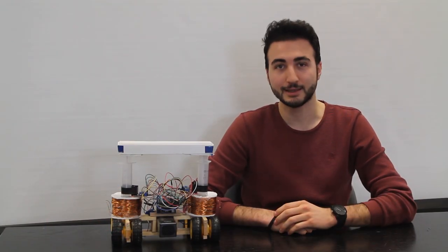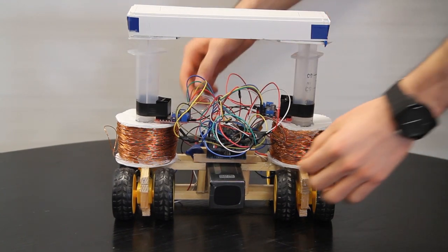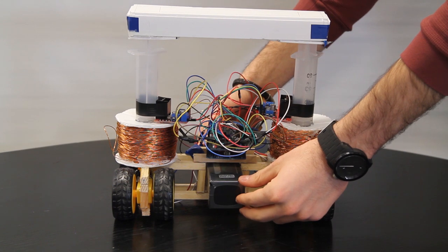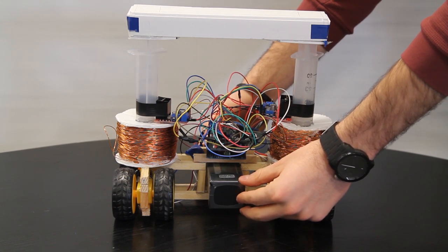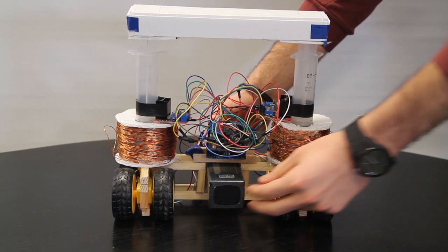Here is our prototype. Let me introduce the components. As a controller, we chose to use Arduino Uno as you can see at the center. And just below it, we have a 3S 11.1V LiPo battery that supplies all the energy to the whole system with a few voltage divider circuits.